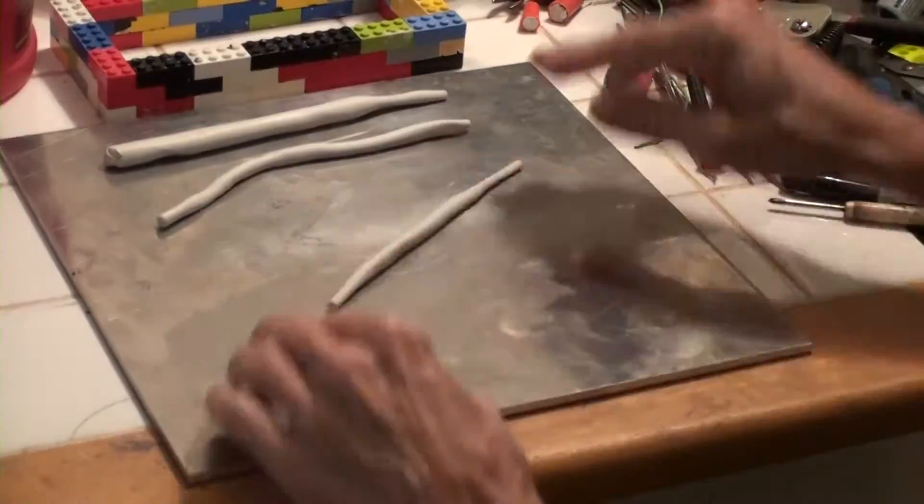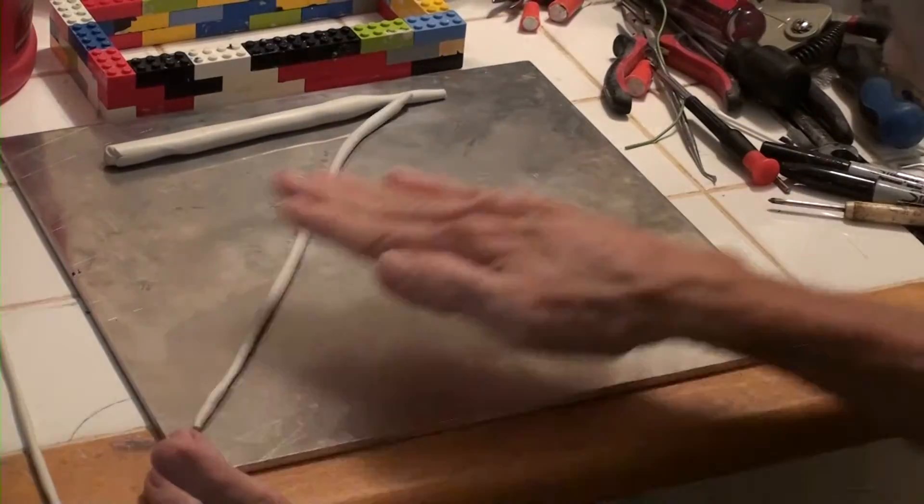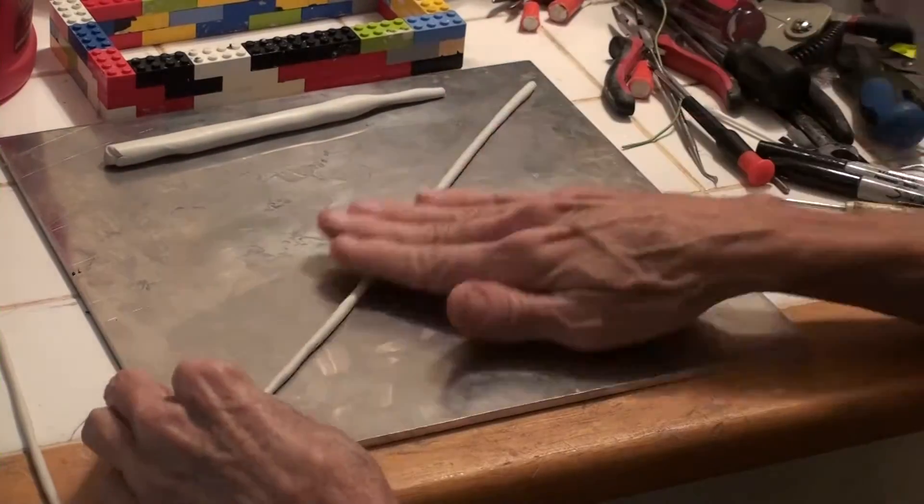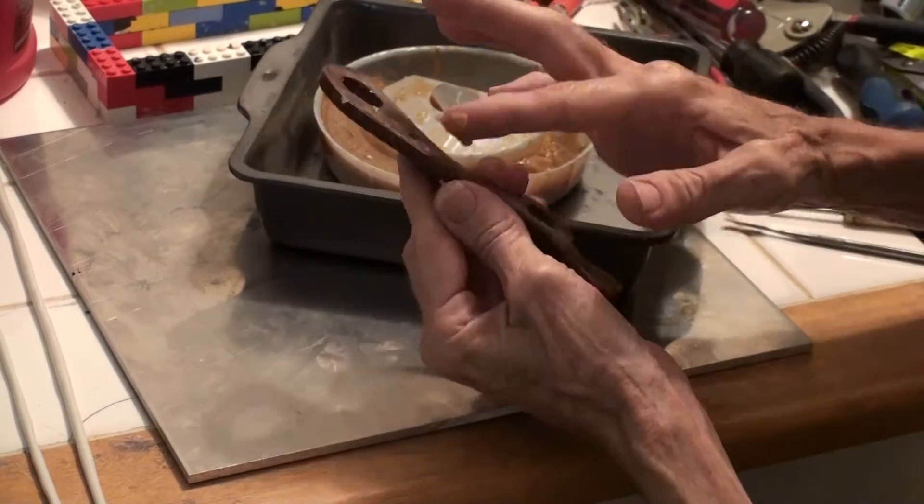The clay snakes will be used to form a gasket below the mold box, sealing the mold blocks to this aluminum plate.